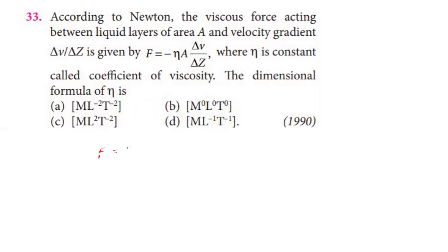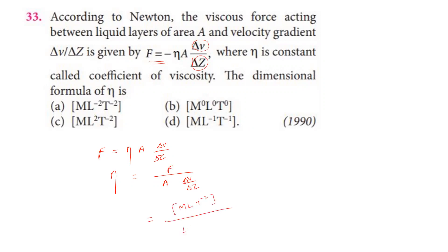Rearranging: η equals F divided by A divided by (δV/δZ). Force dimension is MLT⁻², area dimension is L², velocity δV is LT⁻¹, and δZ is length L.